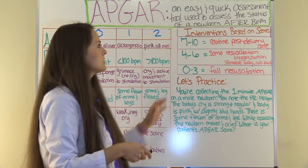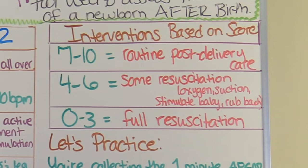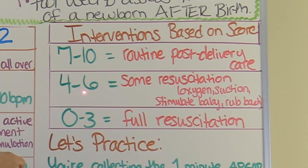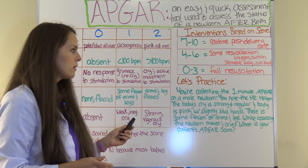Now let's look at the interventions based on the score. If the newborn scores a seven to ten, you would provide routine post-delivery care. If the infant scores a four to six, it would need some resuscitation — maybe oxygen, suction, stimulating the baby, rubbing the back, getting it to move. A score of zero to three would require full resuscitation.